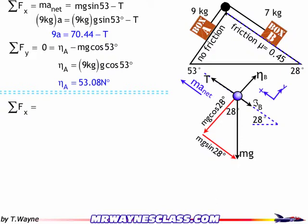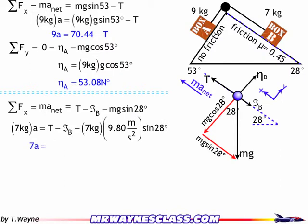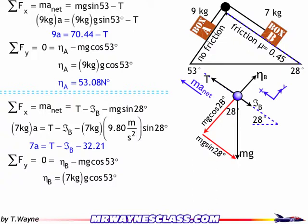Summing forces in the x direction for the second free body — the x direction is parallel to ma net, which defines direction and what's positive. Every force going the same direction as ma net is positive; opposite is negative. So ma net equals T minus friction on B minus mg sine 28. Putting in numbers: 7a − T − f_B = −32.21. In the y direction it equals zero, giving N_B minus mg cosine 28 = 0, so N_B equals 7g cosine 28, giving a value for the normal force.